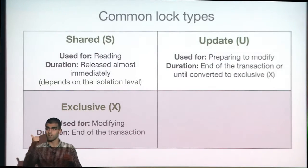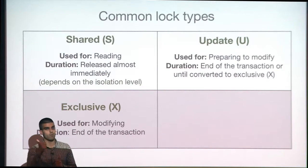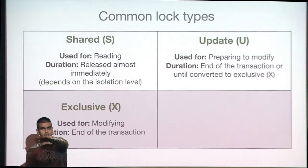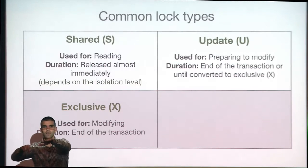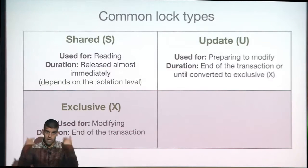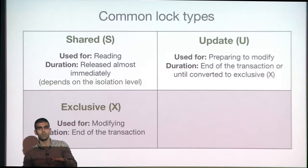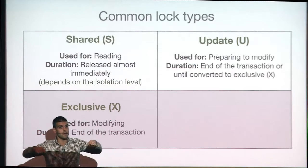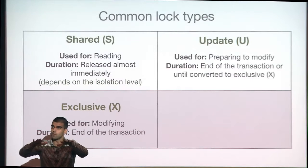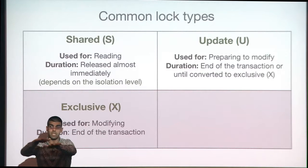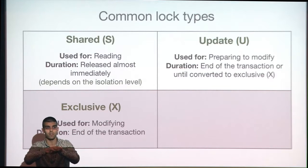If I place an exclusive lock and wait for that fifth row, I'm blocking the readers, because exclusive and shared don't like each other. The clever solution: place update locks on those records. Once we're ready to modify, those locks are immediately converted to exclusive. In the meantime, those records are still readable — you improve concurrency that way. SQL Server does this for us.